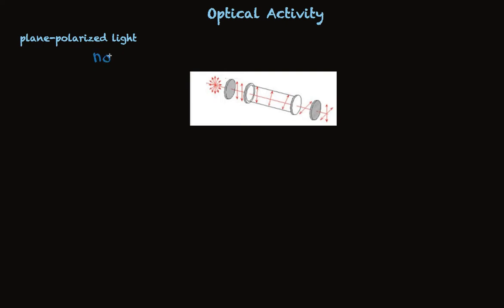Normal light is different from plane-polarized light. It vibrates in all planes that contain the axis of propagation, schematically illustrated here.